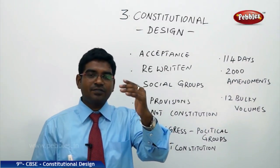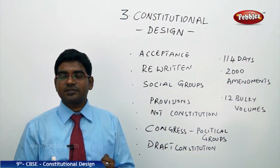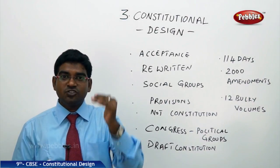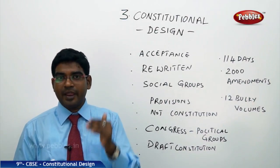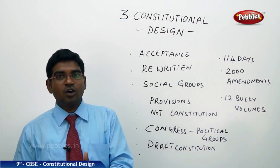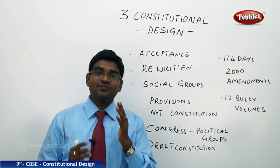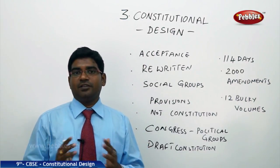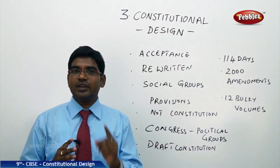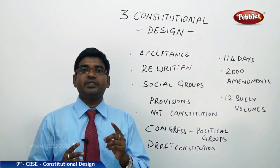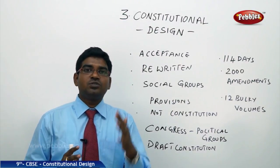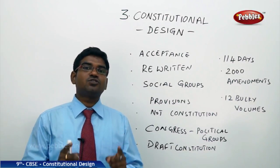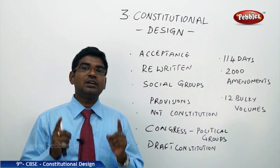Nearly 2000 amendments were made after doubts were clarified, and finally the constitution was in place. It took exactly 2 years, 11 months, and 18 days to draft a constitution for India — which is the lengthiest written constitution in the world to this day.